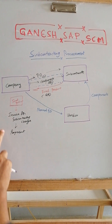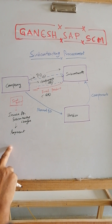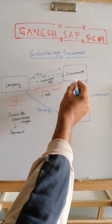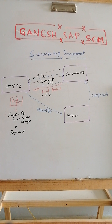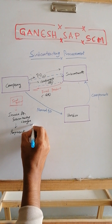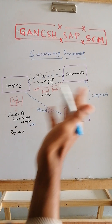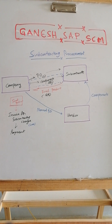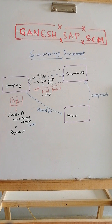The subcontractor receives the components from the vendor, produces the final product, and sends it to the company — so the company does not need to send components separately. For the payment, for example, if the subcontractor charges 100 rupees per piece and you order 200 pieces, you pay 20,000 rupees — only the service charges.